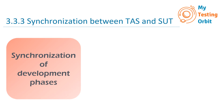Moving on, we have synchronization of development phases. The first point is to coordinate development phases for timely TAS readiness, meaning making sure different parts of our project work together smoothly. One key reason we need to do this is to ensure that our test automation solution, the TAS, is ready when we need it for testing our SUT. In simpler terms, it's like making sure you have your tools ready before you start building something.